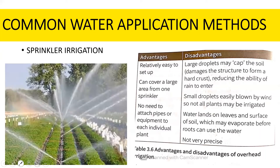Now let's look at sprinkler irrigation and its advantages and disadvantages. Sprinkler irrigation is a method of applying water in a controlled manner similar to rainfall. It is a device used to irrigate agricultural crops, lawns, landscapes and other areas. The advantages of sprinkler irrigation are: it is affordable and easy to set up; it provides uniform distribution of water with high efficiency and minimum water loss; it allows accurate and easy measurement of distributed water; and it reduces labour cost and is easy to operate.